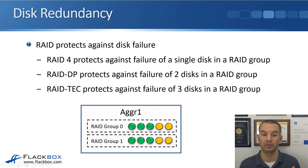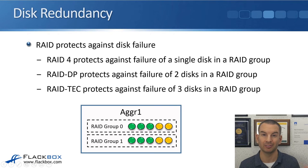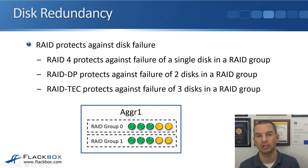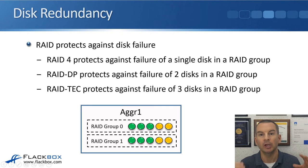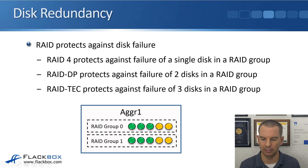Starting at the bottom level with the disks: redundancy for disks failing is provided with RAID. RAID 4 protects against failure of a single disk in a RAID group. RAID DP (dual protection) protects against failure of two disks in a RAID group, and RAID-TEC (triple erasure coding) protects against failure of three disks in a RAID group. This was already covered in detail in the physical resources section.